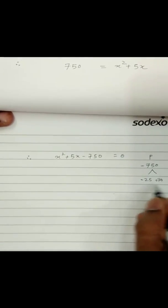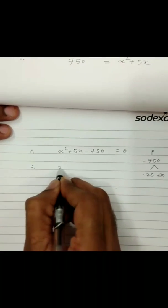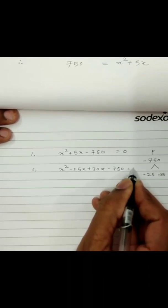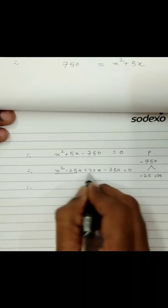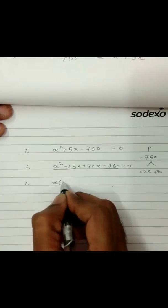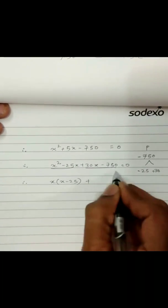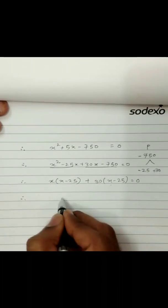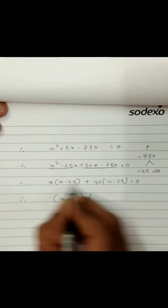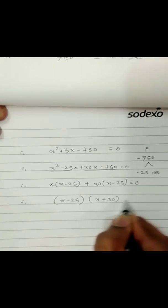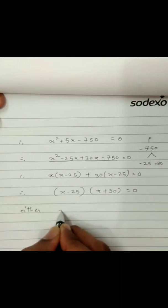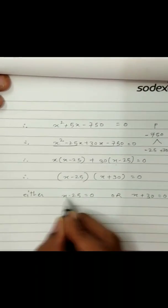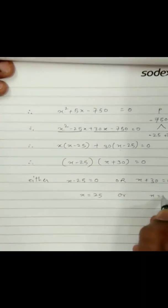So we write x squared minus 25x plus 30x minus 750 equals 0. Taking x common from the first two terms gives x times x minus 25, then taking x minus 25 common outside gives x minus 25 times x plus 30 equals 0. When the product of two numbers is zero, either x minus 25 equals 0 or x plus 30 equals 0. So x equals 25 or x equals negative 30.